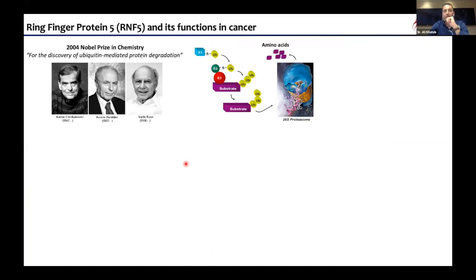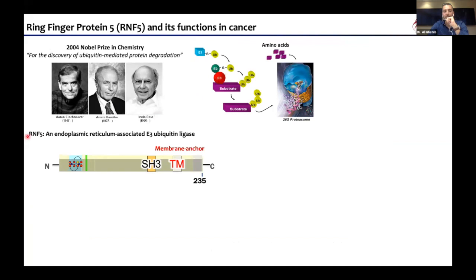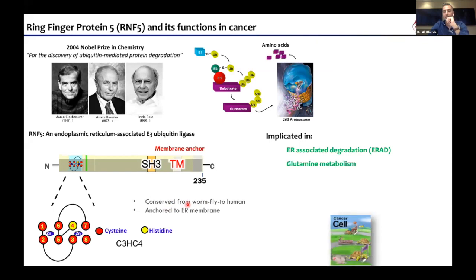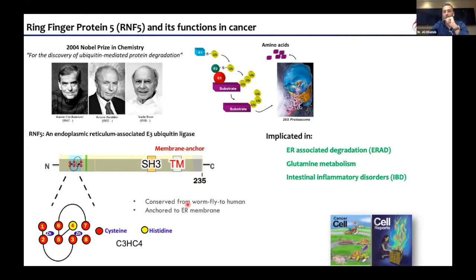Ubiquitination is carried out by the sequential activity of E1, E2, and E3 enzymes, and one of the E3 ligases that we study in the lab is RNF5 — ring finger protein 5. It's an endoplasmic reticulum-associated E3 ligase. RNF5 is a small protein of around 17 kilodaltons, conserved from worm to human, and has a transmembrane domain which anchors it to the ER membrane. Work from our lab and others shows that RNF5 is implicated in ER-associated degradation, ER stress response, glutamine metabolism, intestinal inflammatory disorders, and we have recently shown it is also implicated in anti-tumor immunity and gut microbiome regulation.